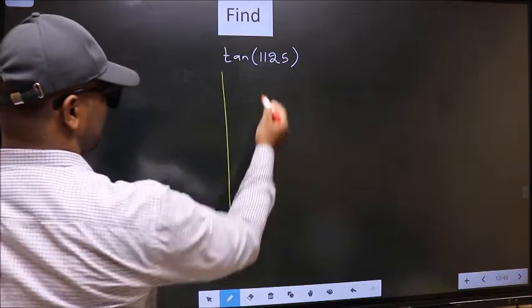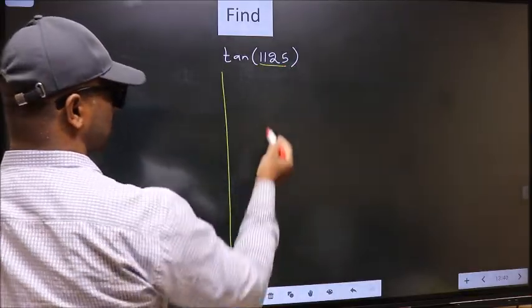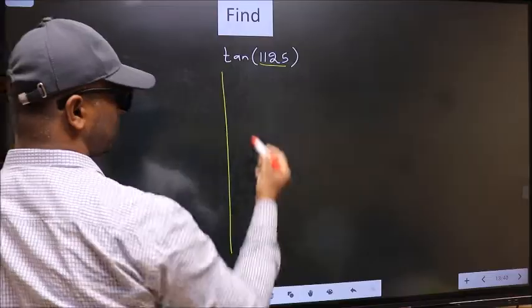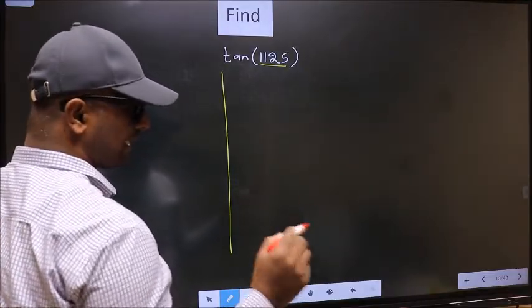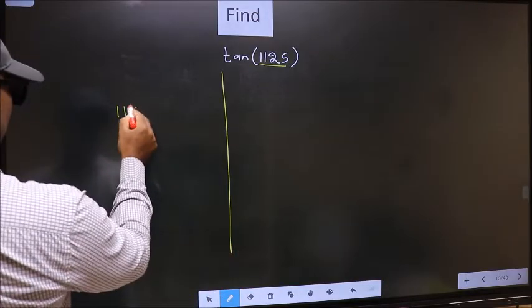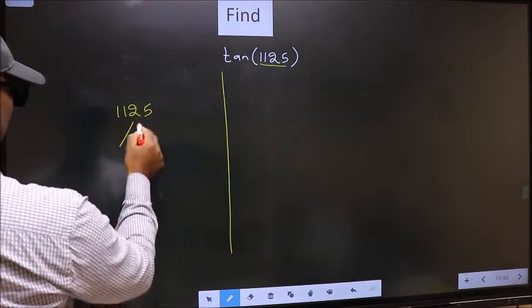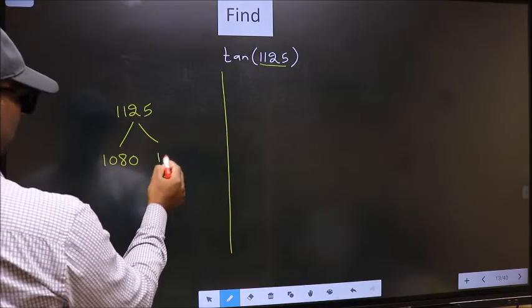Here we have 1125. Now we should check 1125 lies between which two multiples of 180. What I mean is 1125 lies between 1080 and 1260.